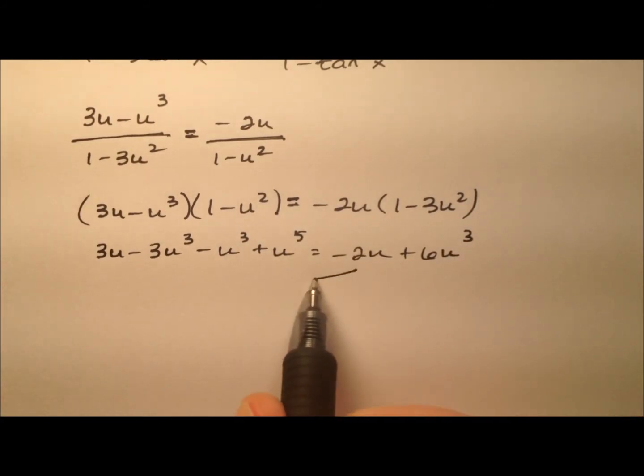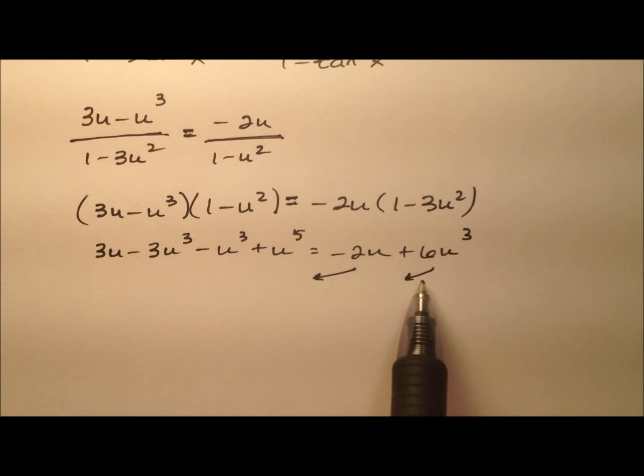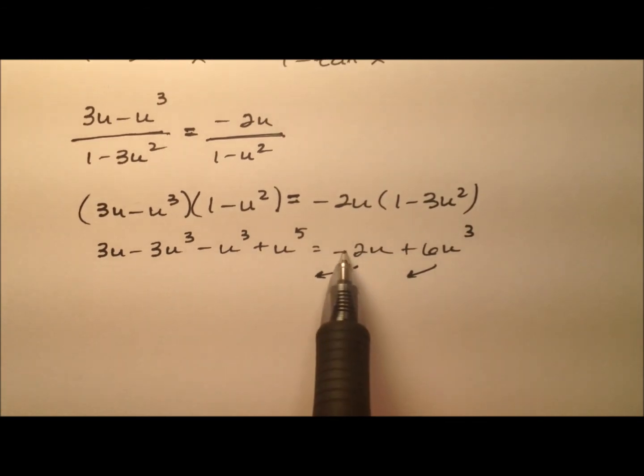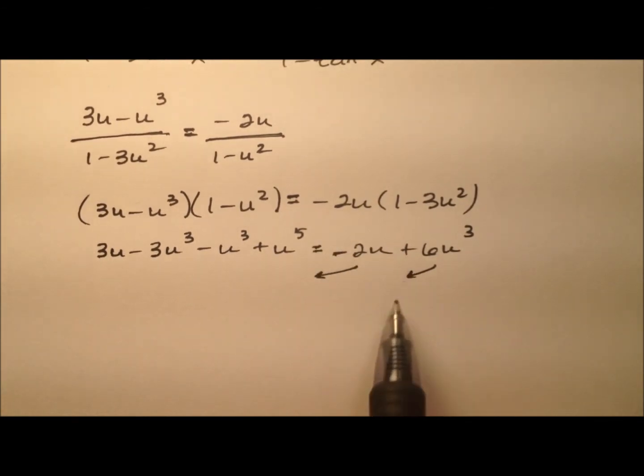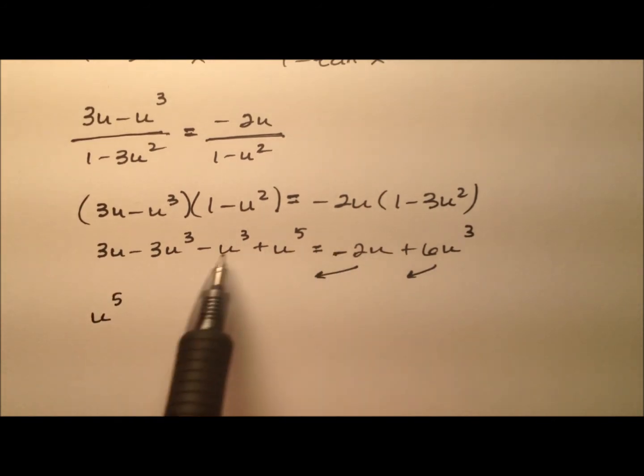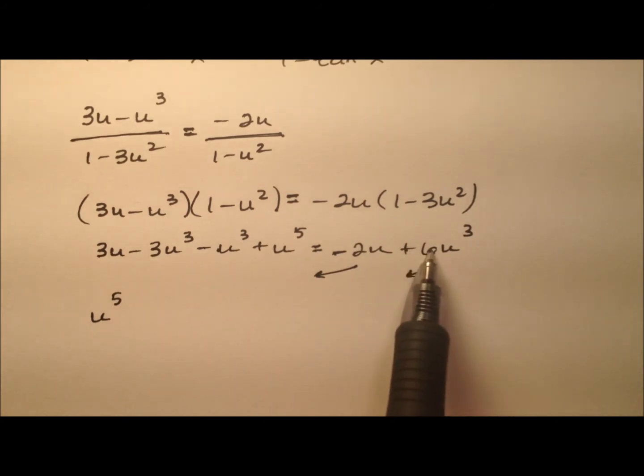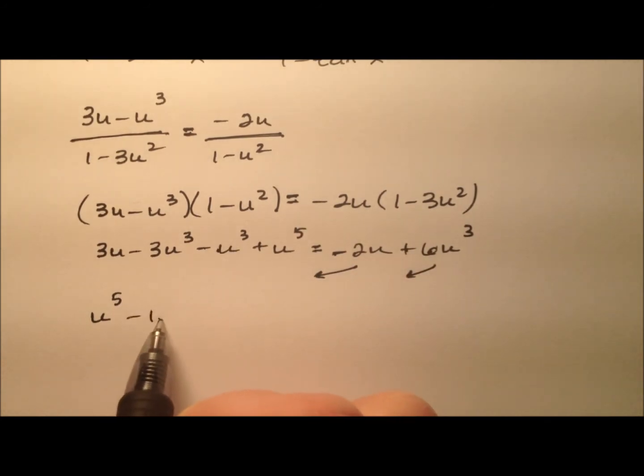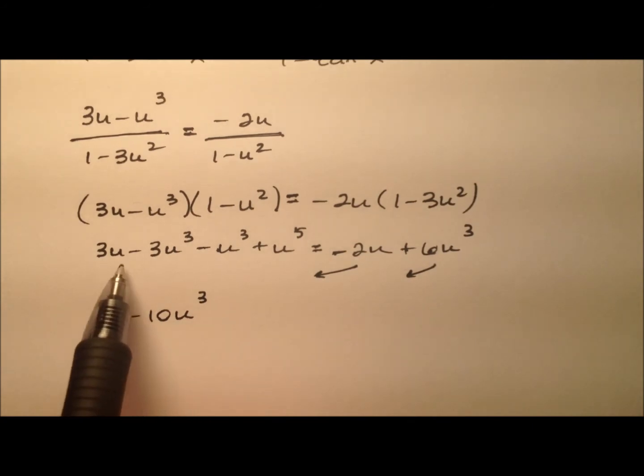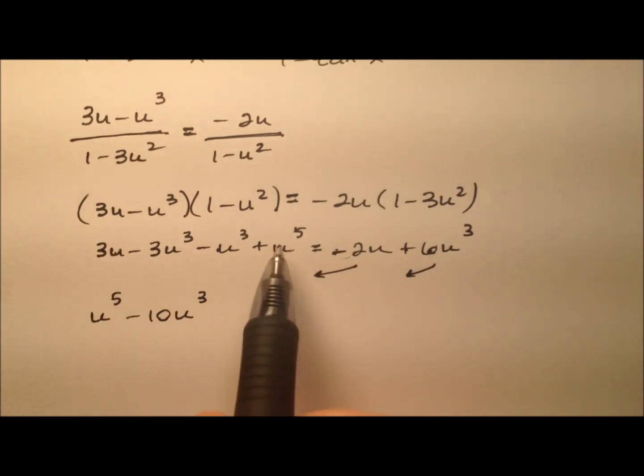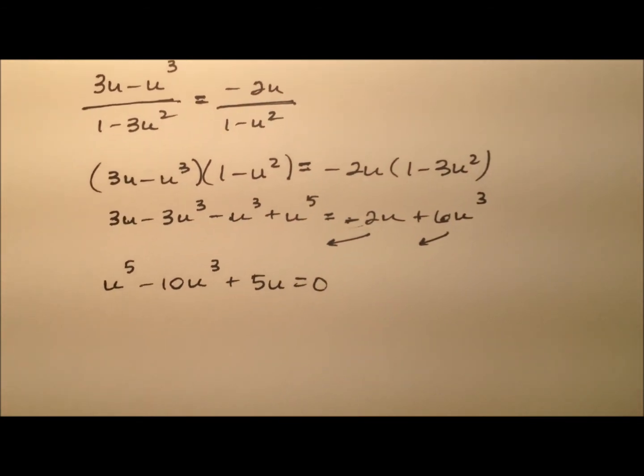And so let's bounce these two terms from the right side over to the left. And by doing so we can just change their signs out front. So u to the fifth and then cubed terms. So minus 3 and minus 1 and minus 6 then when this gets moved over. So it looks like negative 10u cubed. And then we have a 3u and a plus 2u. So that will give me a 5u and that equals 0.